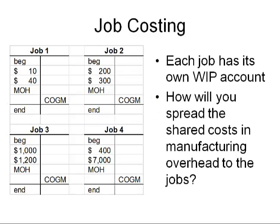When we get into job costing, where every item is not exactly the same, we have to have a separate work in process account for each job to keep track of costs in individual jobs because they differ. Overhead has not been assigned yet to the individual jobs, so we need a methodology for figuring out how much overhead should go to each job, because overhead is typically a shared cost. The cost of the building doesn't really belong to any individual job, whereas material and labor was working on that particular window, boat, or batch. So we need a methodology for spreading overhead to the jobs — that's where the predetermined overhead rate comes in.